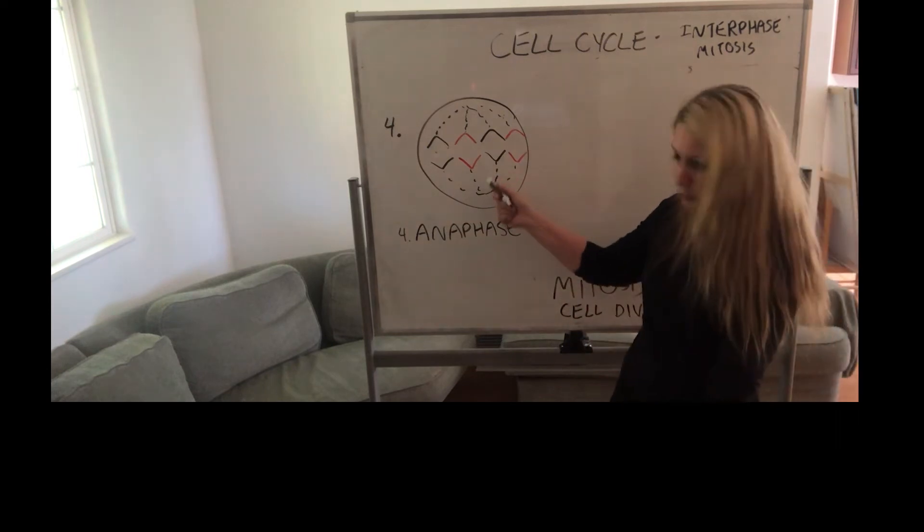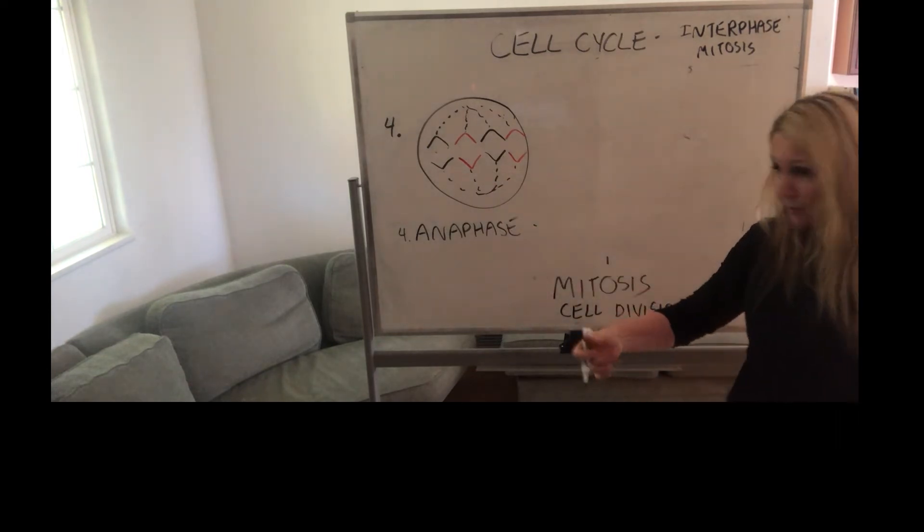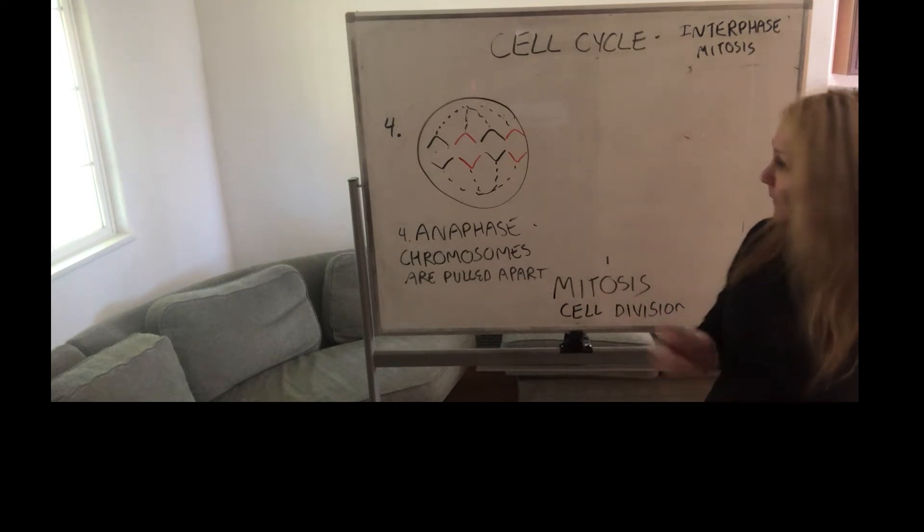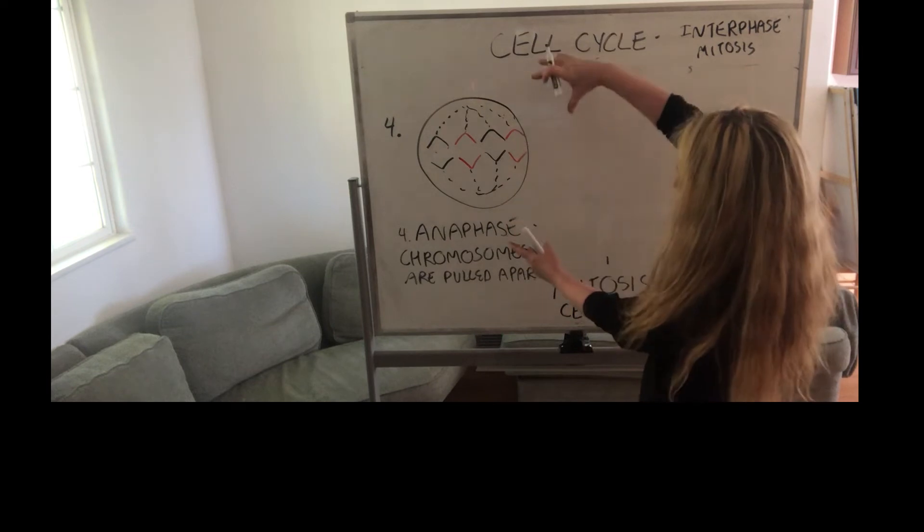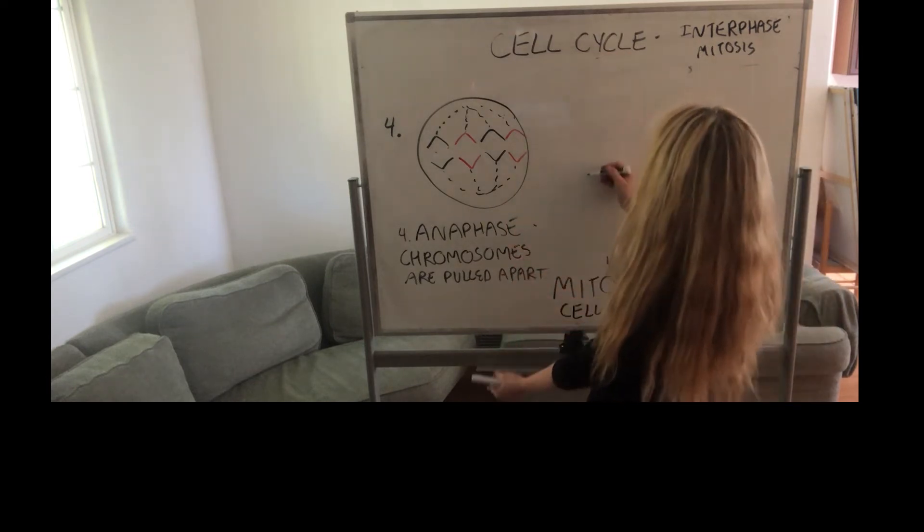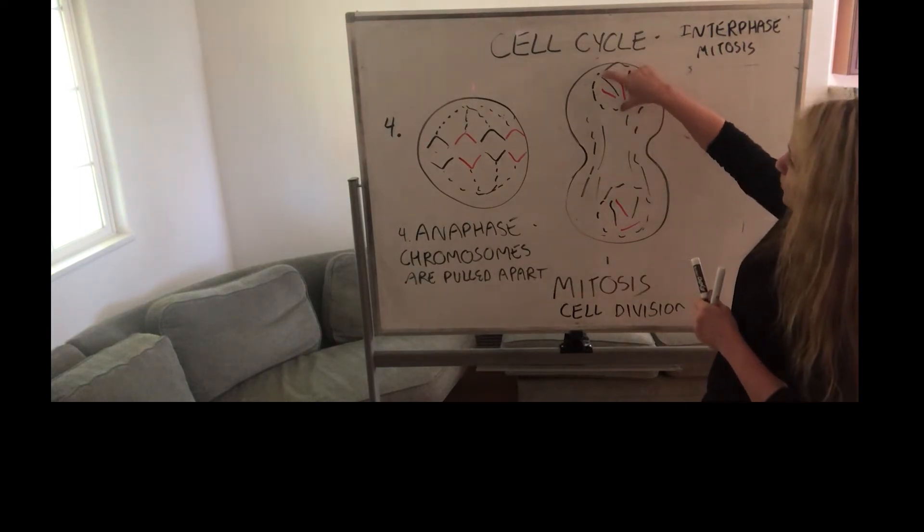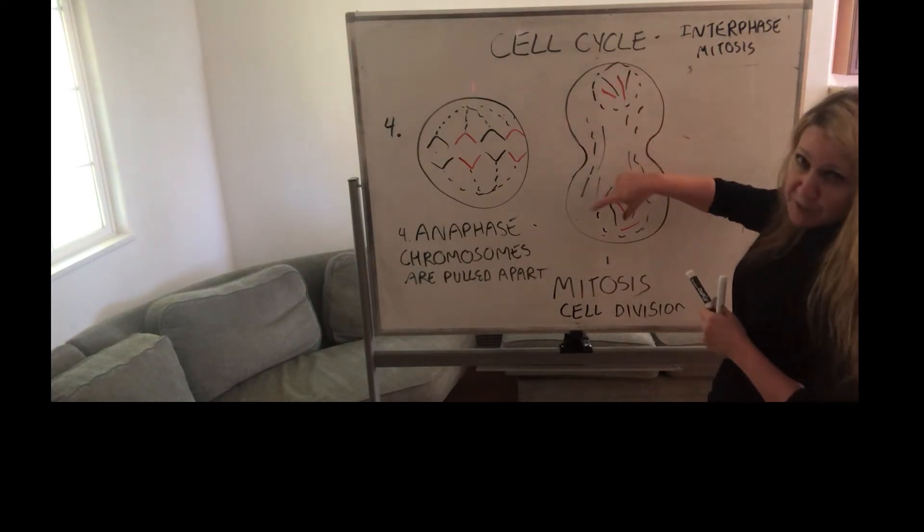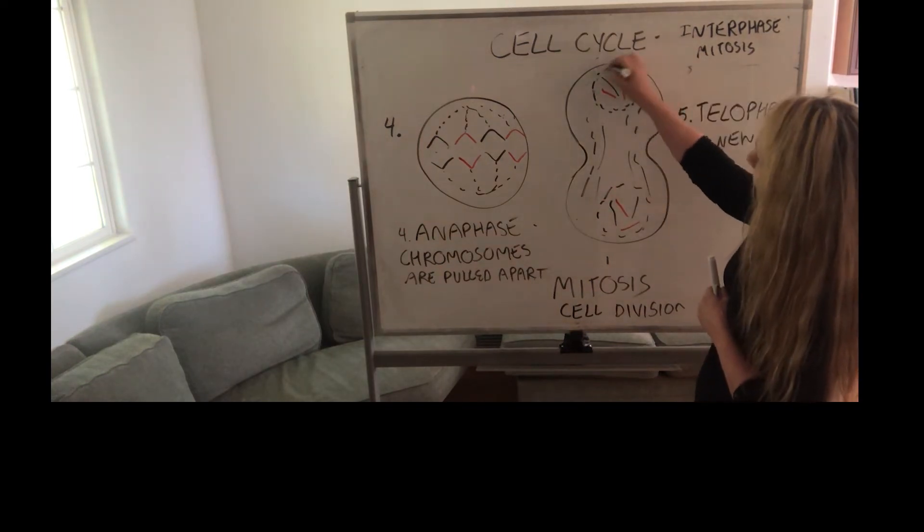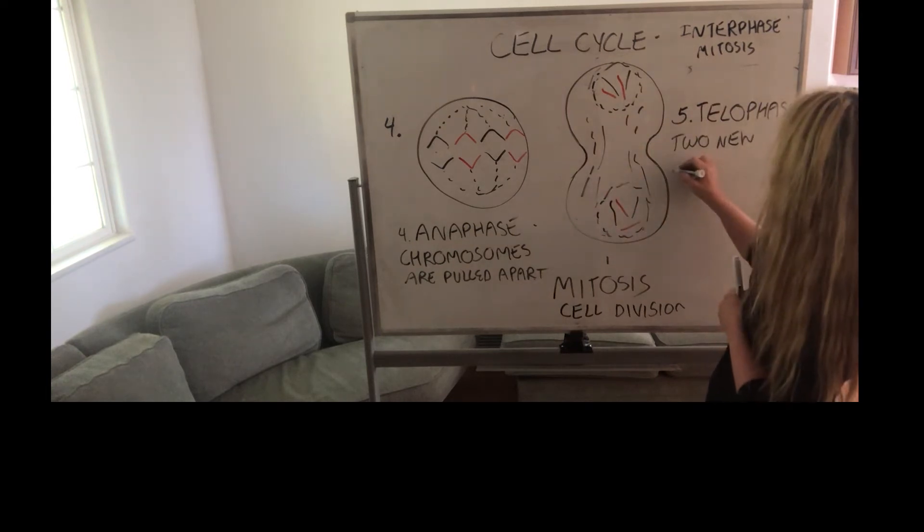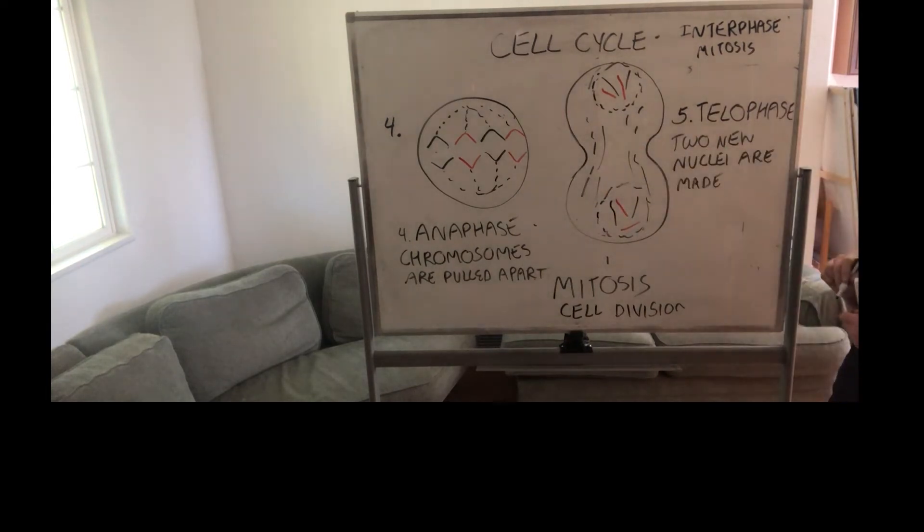So anaphase is when the chromosomes are pulled apart. The next phase then—think about, now we're going to make two cells, so we're going to keep pulling. Phase is called telophase, and the nuclei—which means more than one nucleus—are also formed, because I just drew a dotted line to indicate it's forming. So the nucleus is being made.